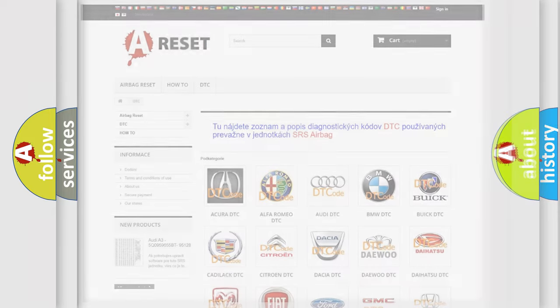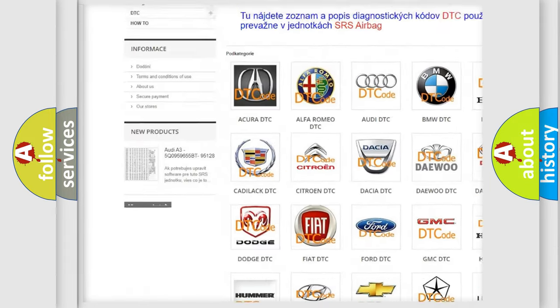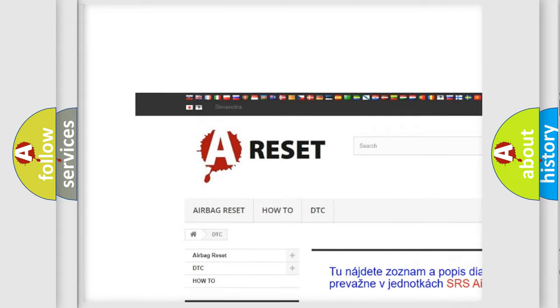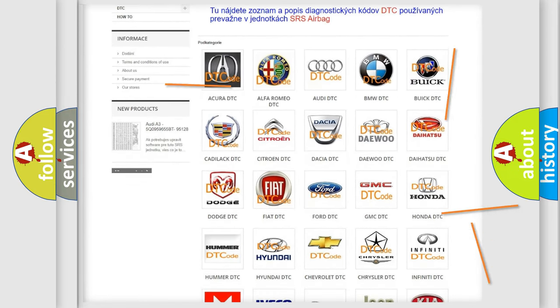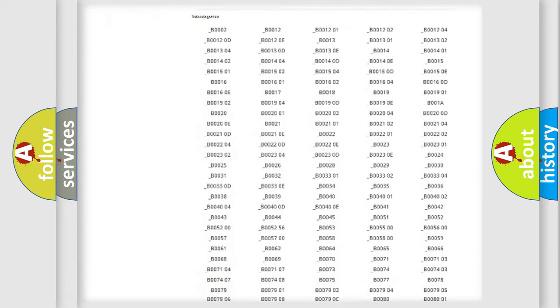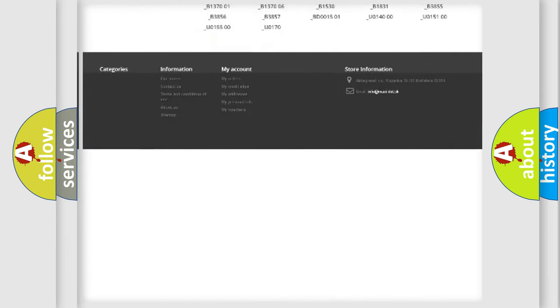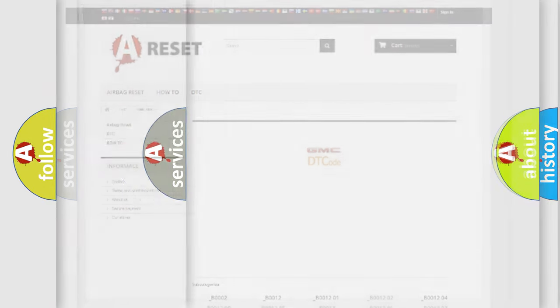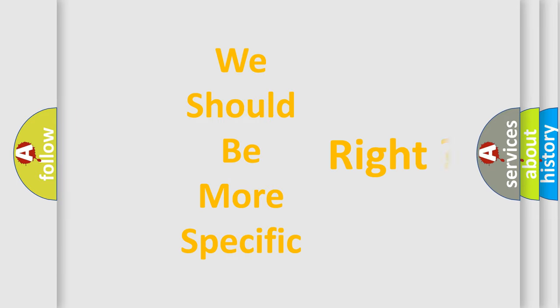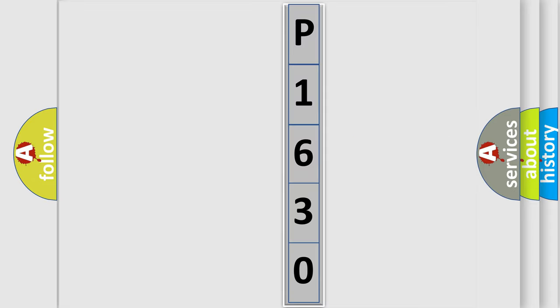Our website airbagreset.sk produces useful videos for you. You do not have to go through the OBD-II protocol anymore to know how to troubleshoot any car breakdown. You will find all the diagnostic codes that can be diagnosed in GMC vehicles. Also many other useful things. The following demonstration will help you look into the world of software for car control units. You can move the video a bit further.